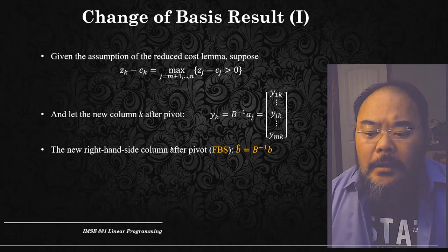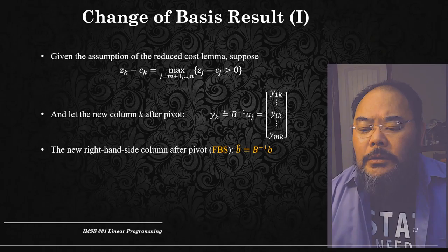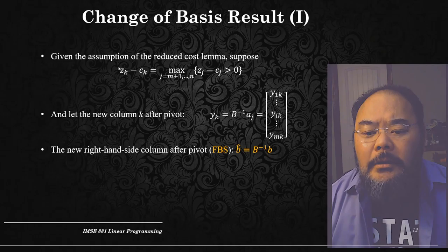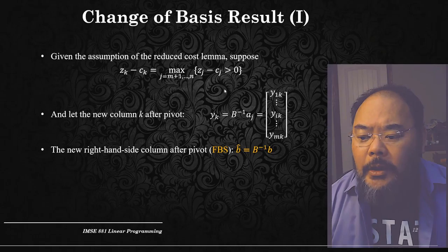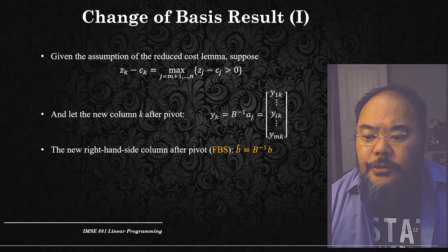The new right-hand side column after the pivot — the feasible basic solution — equals b-hat, which equals B inverse times b. Remember these two formulas: how the y_k column is updated and how the right-hand side is updated, because from these, z_k minus c_k and z_j minus c_j can be recalculated. We'll use these quite a bit in the next few lectures.